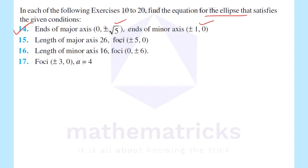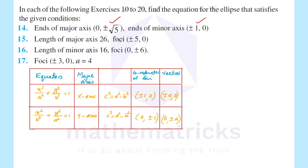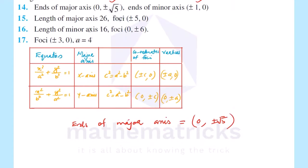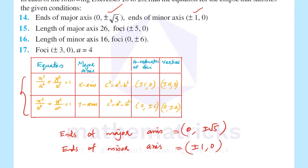Here, we have the ends of the major axis and ends of the minor axis. We will find the equation of the ellipse. The ends of the major axis are equal to (0, ±√5), and the ends of the minor axis are equal to (±1, 0).